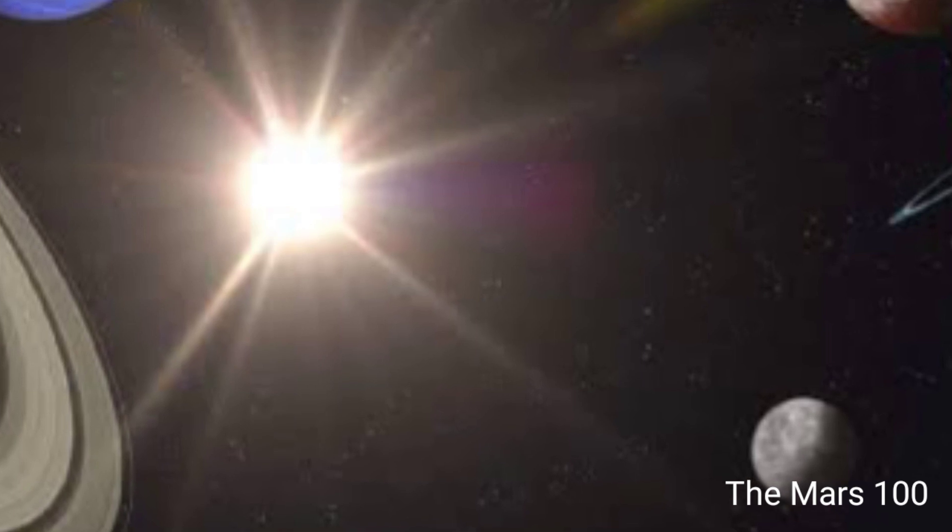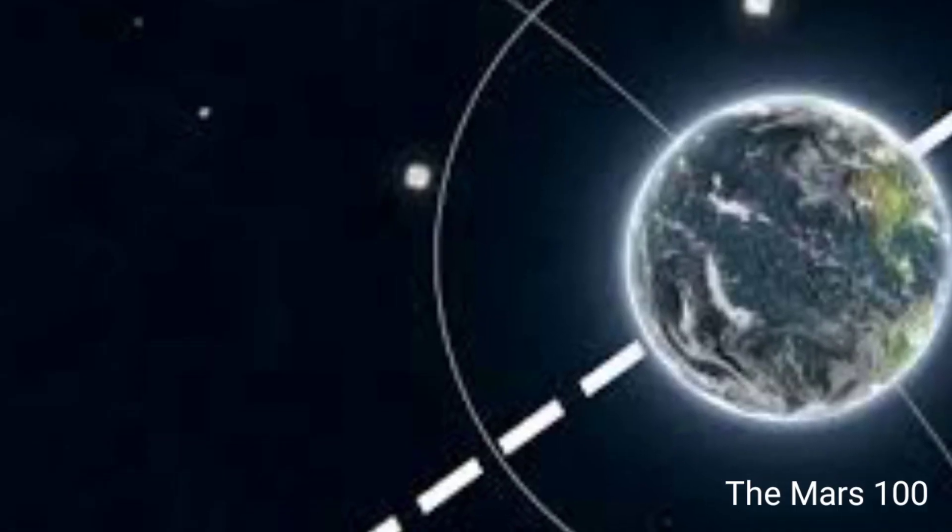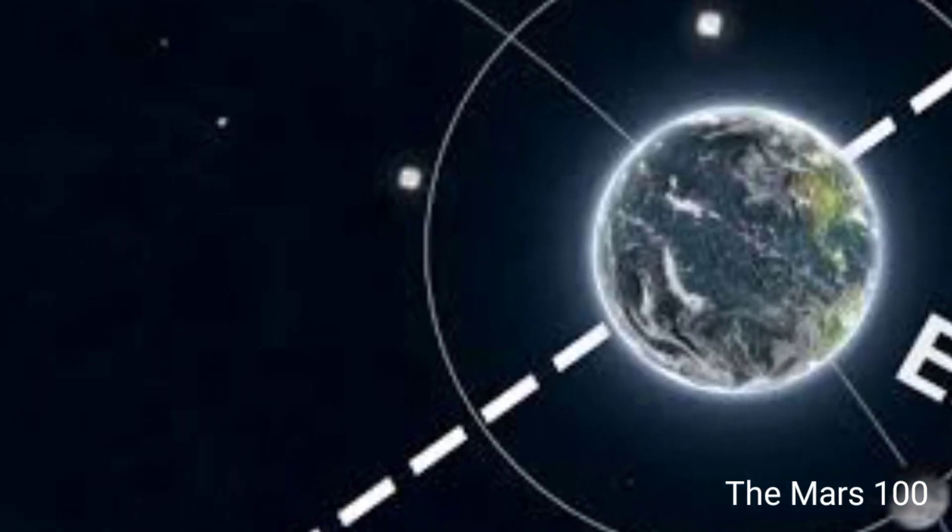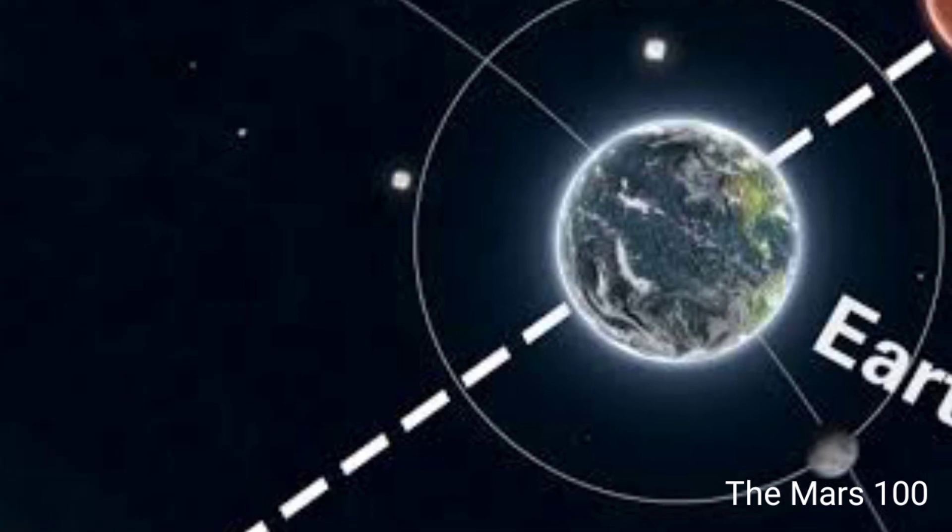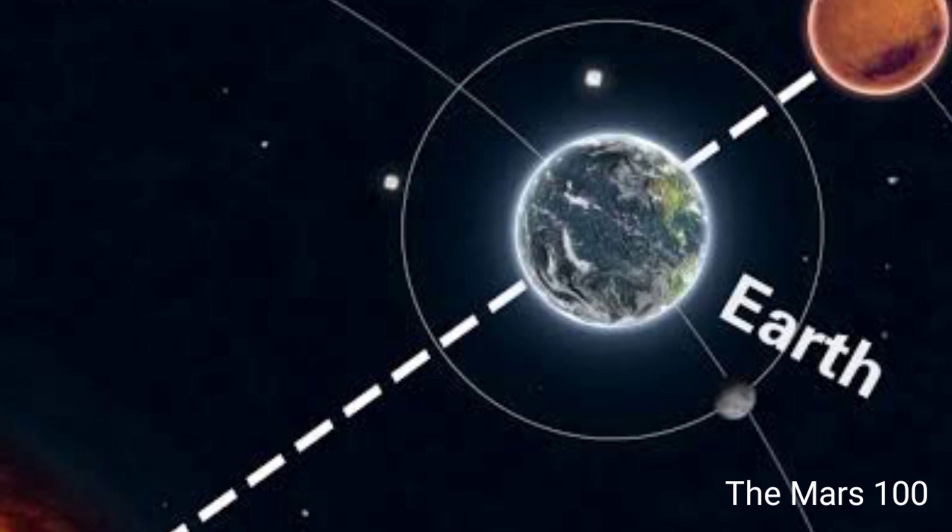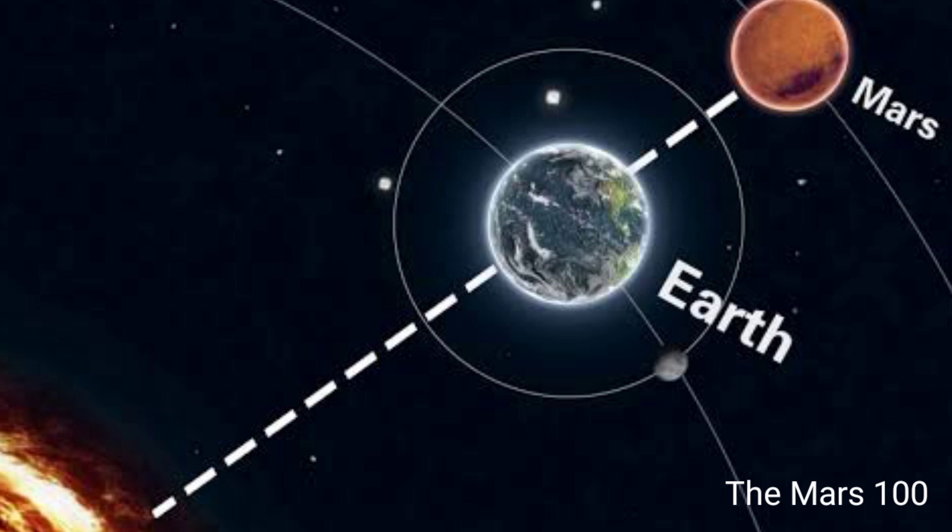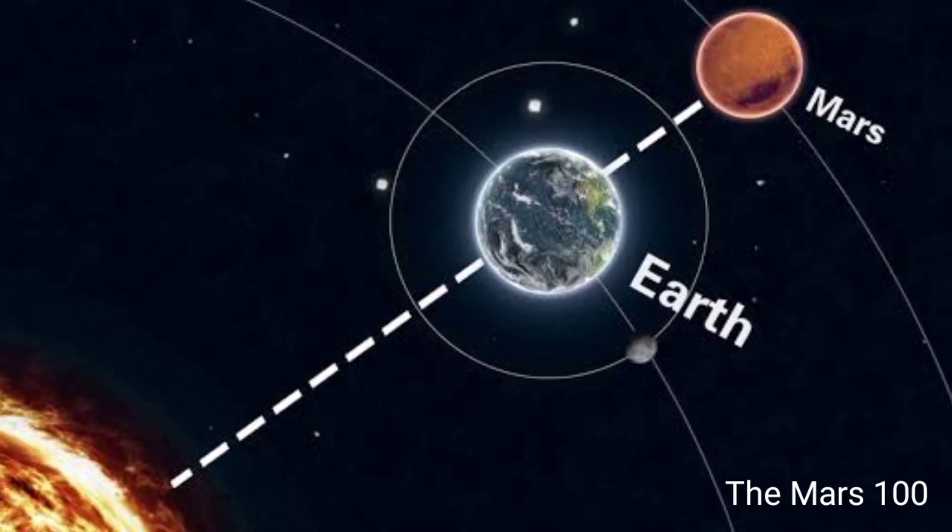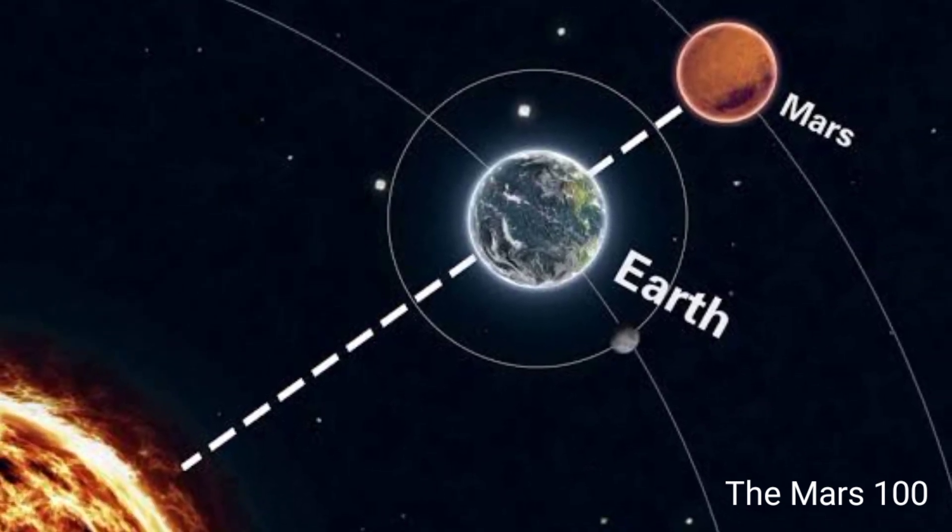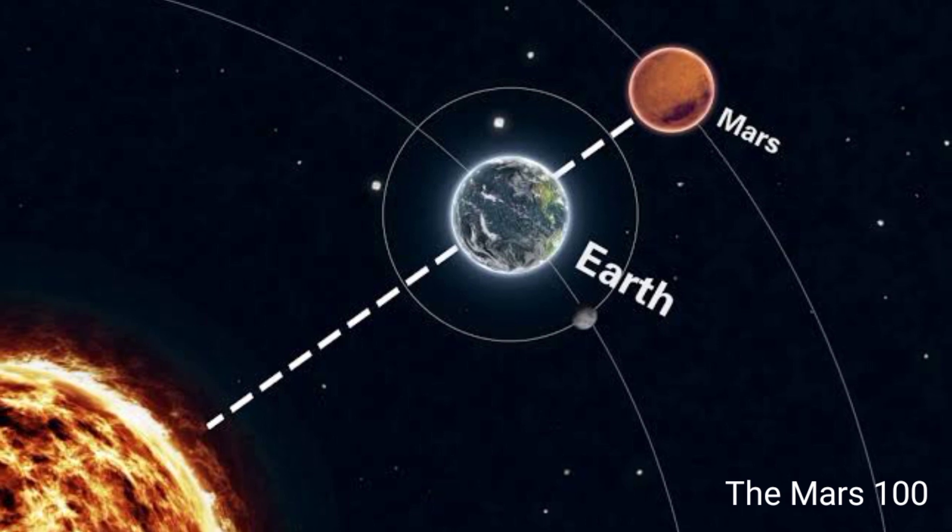According to NASA, the two will not be that close again until the year 2237. Mars and Earth are furthest apart when they are both at aphelion and on opposite sides of the Sun.